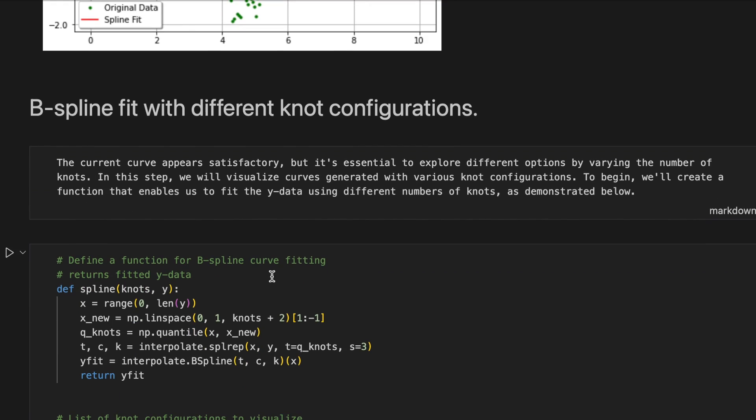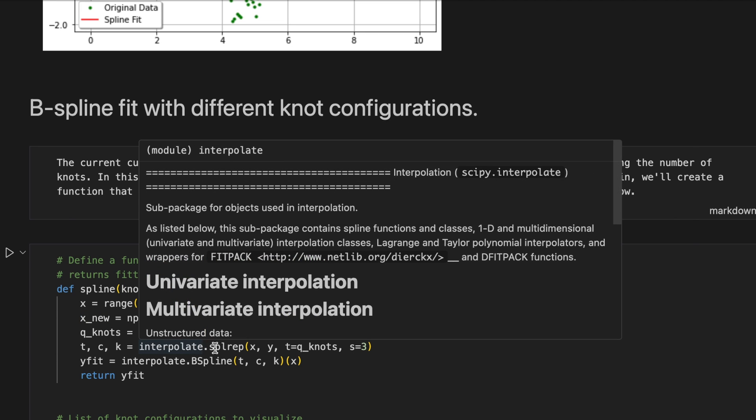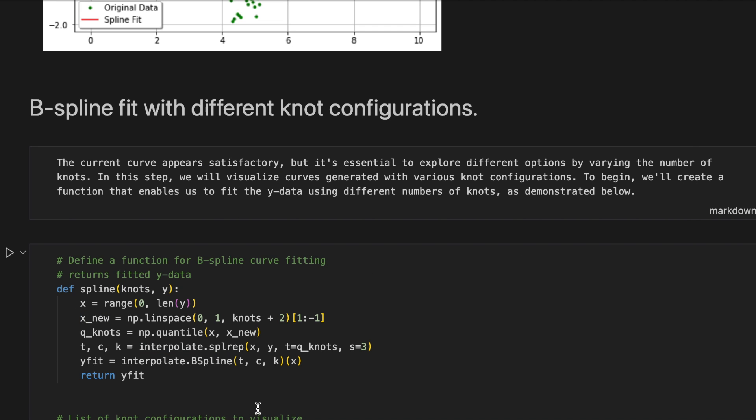Here we define a function for b-spline curve fitting and it returns the fitted y data. And here is the same code we have seen above. So first we define the range and we create new x data and we get the quantile nodes. Then we use SPLREP and finally b-spline fitting.